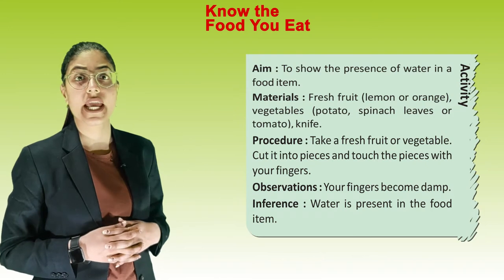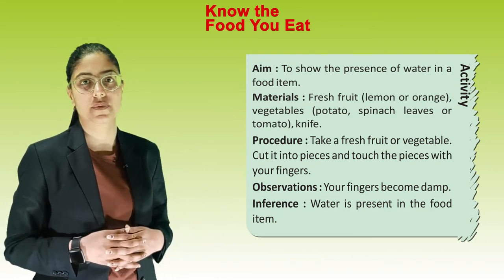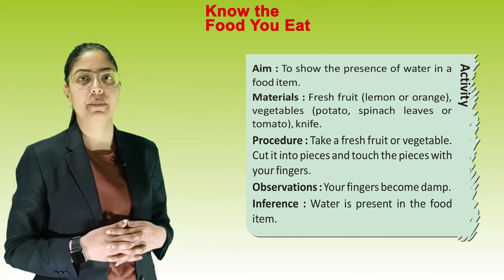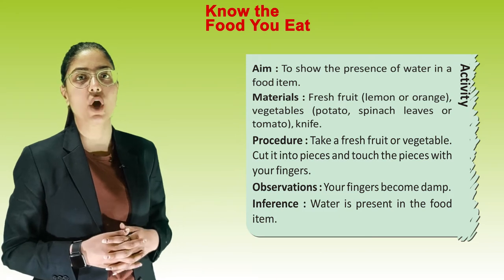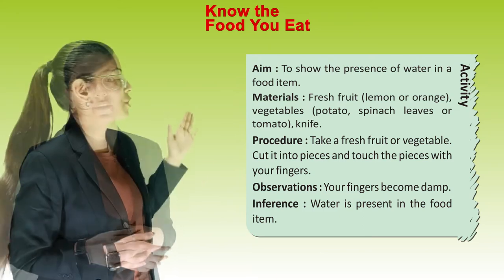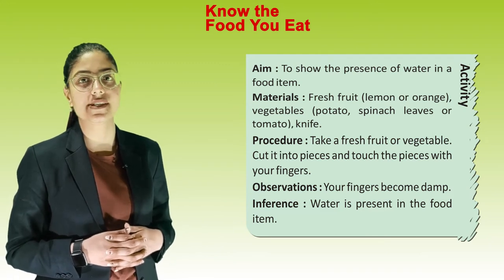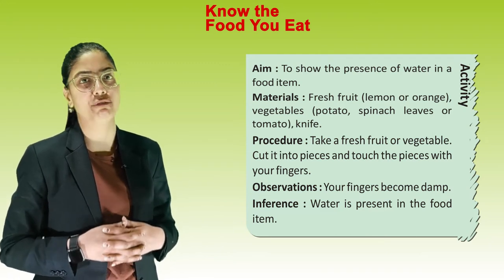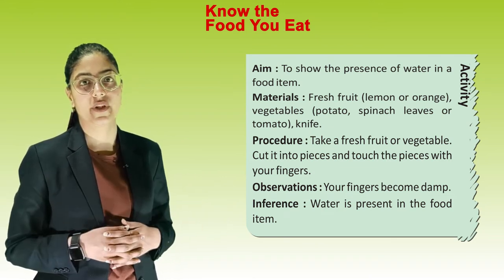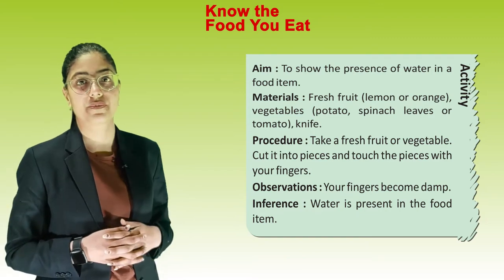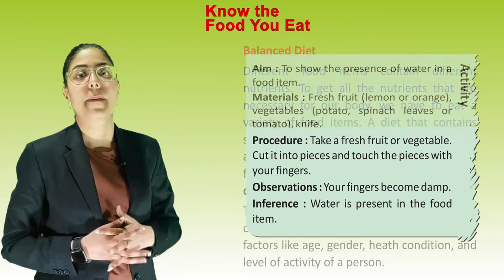Activity — Aim: To show the presence of water in food items. Materials: fresh fruit such as lemon or orange, vegetable such as potato, spinach leaf or tomato, and a knife. Procedure: Take a fresh fruit or vegetable, cut it into pieces and touch the pieces with your fingers. Observation: Your fingers become moist. Inference: Water is present in the food item.